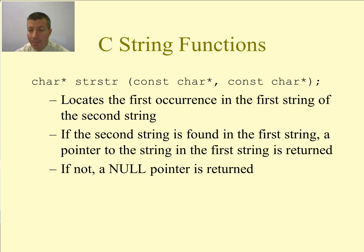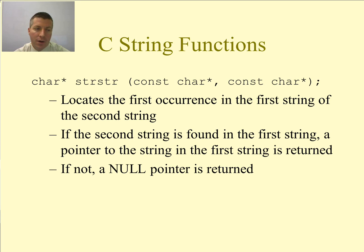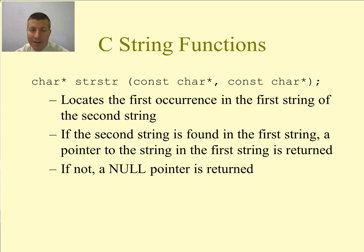strstr — kind of a fun name — locates the first occurrence in the first string of the second string. So we're not just looking for individual characters; we're looking for the occurrence of the entire second string. If the entire second string exists in the first one, this returns a pointer to the first character denoting where that second string begins. If not, a null pointer is returned. This is a good substring function.